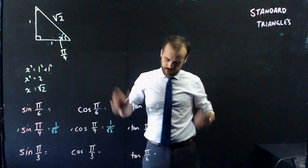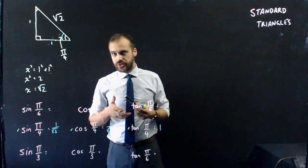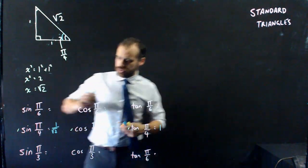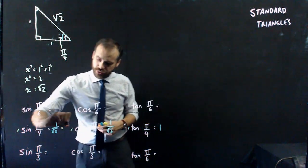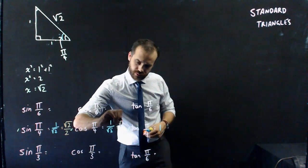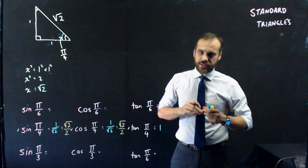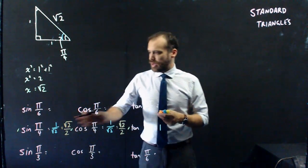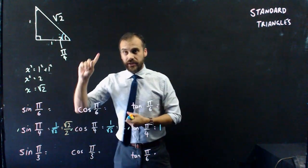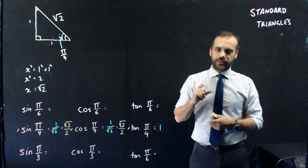Not to get too pedantic here, but a lot of people don't like writing 1 on root 2 — they think it's a bit rude to put a square root on the bottom. Take my word for it: 1 on root 2 is equal to root 2 on 2. You'll see it written both ways depending on how pedantic the people are that write your textbooks. So that is our first standard triangle and that is how you find sine pi on 4, cos pi on 4 and tan pi on 4. You'll just be able to do them like that now.